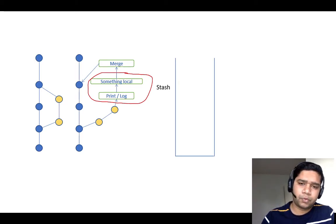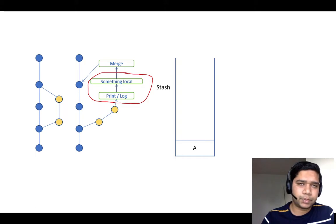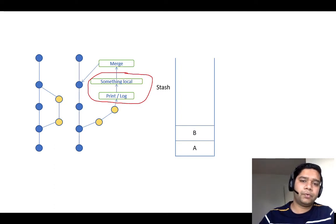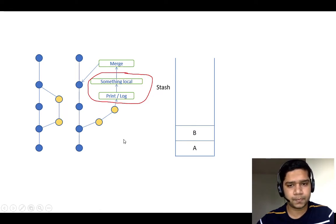It works like a stack in data structures. If we put something into a stack — let's call it stash A — it will reside at the bottom of the stack. Then we change something else and make another stash B; it goes on top. Whenever we say stash pop, stash B comes out first and its changes are applied to the local branch. Then if we say stash pop again, stash A comes out.